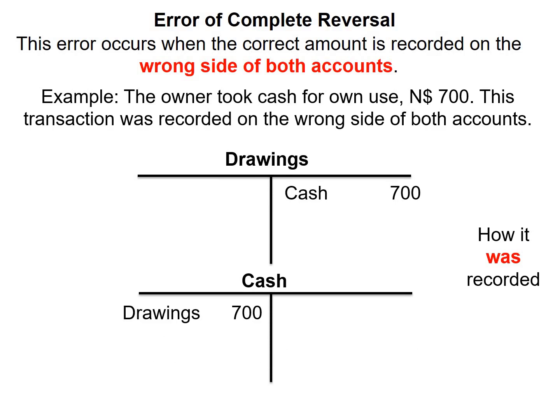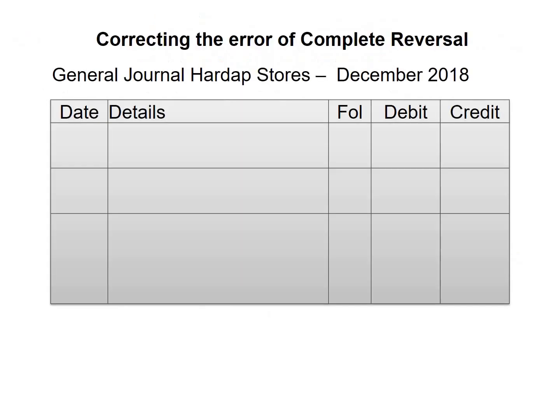By looking at this, you can see that this is incorrect, because if you withdraw cash, your cash will be credited and not debited. Let's now go have a look at how we will rectify this in our general journal.